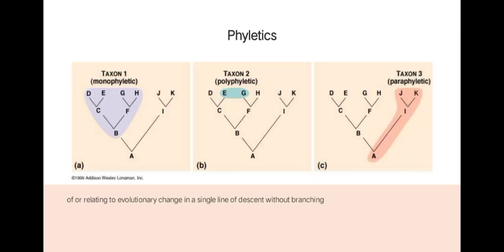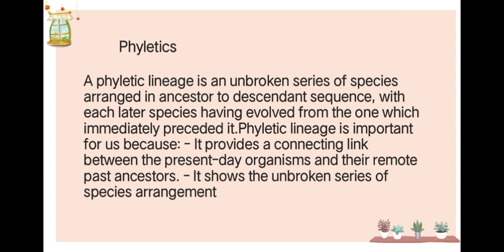Next, phyletics. The taxa can be monophyletic, polyphyletic, or paraphyletic. Phyletics refers to evolutionary change in a single line of descent without branching. A phyletic lineage is an unbroken series of species arranged in ancestor-to-descendant sequence, with each species having evolved from the one which immediately preceded it. Phyletic lineage is important because it provides a connecting link between present-day organisms and their remote past ancestors, and shows the unbroken series of species arrangement.